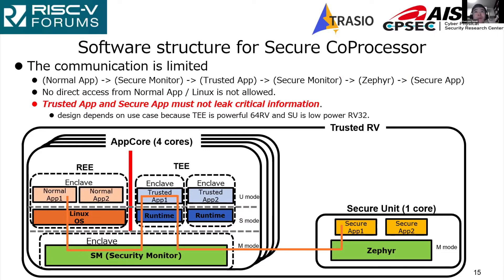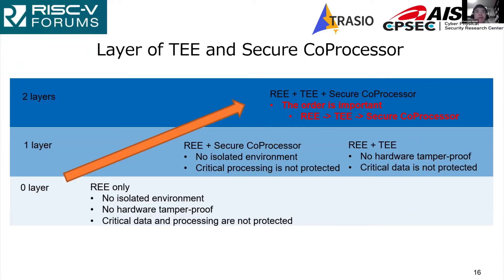This slide shows the software structure for the secure coprocessor. Communication to the Secure Unit is limited — Linux cannot connect to the Secure Unit directly. Communication must be via trusted application and secure monitor. This slide shows the security layers of TEE and the secure coprocessor. Trusted RB selects two layers which stack the secure processor on TEE, making critical information far from the normal OS.